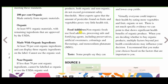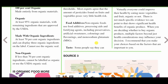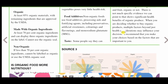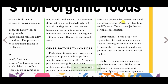Another thing to think about is food additives. Non-organic foods use food additives, processing aids, and fortifying agents including preservatives, artificial sweeteners, colorings and flavorings, and monosodium glutamate or MSG. Regarding taste, some people say they can taste the difference between organic and non-organic food, while others say they find no difference. Taste is a subjective and personal consideration.